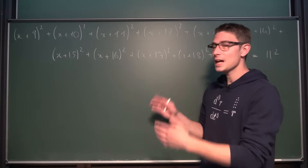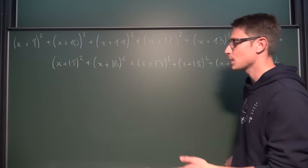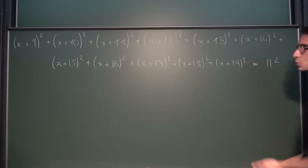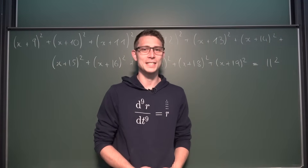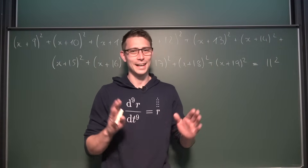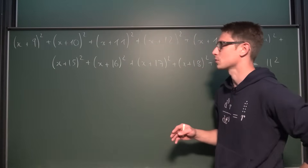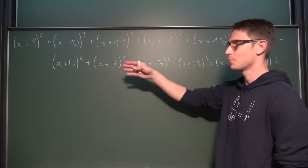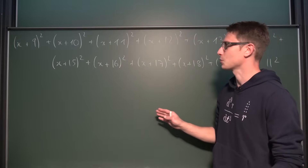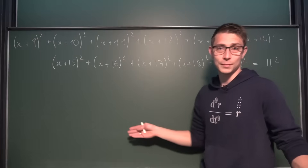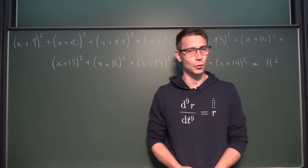So today we have this: (x+9)² + (x+10)² + ... up until (x+19)² equals 11². We need to solve for x. It's an improvised session. I have a certain idea in mind to make this worthwhile — I'm not just going to go through straight multiplying everything out. Try it out for yourself and leave your answer in the comments below.